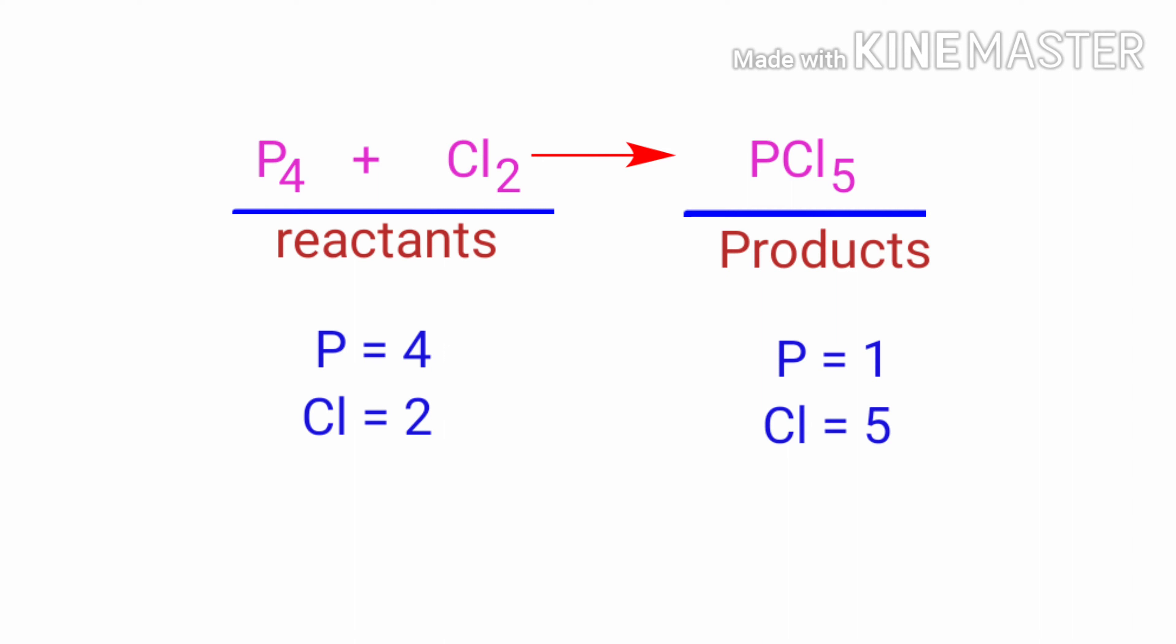In the reactants side, there are 4 Phosphorus atoms and 2 Chlorine atoms present. In the product side, there is 1 Phosphorus atom and 5 Chlorine atoms present. The number of atoms are not balanced on both sides.